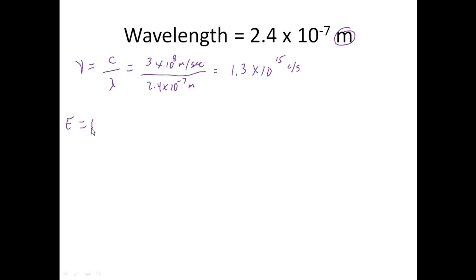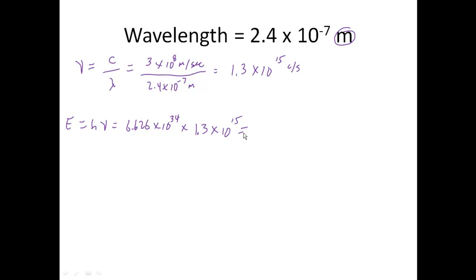So how much energy do we have? Well, energy is equal to Planck's constant times our frequency. So that's equal to 6.626 times 10 to the minus 34th times our frequency, which is 1.3 times 10 to the 15th cycles per second. And that's going to give us an answer for energy of 8.3 times 10 to the minus 19th joules.